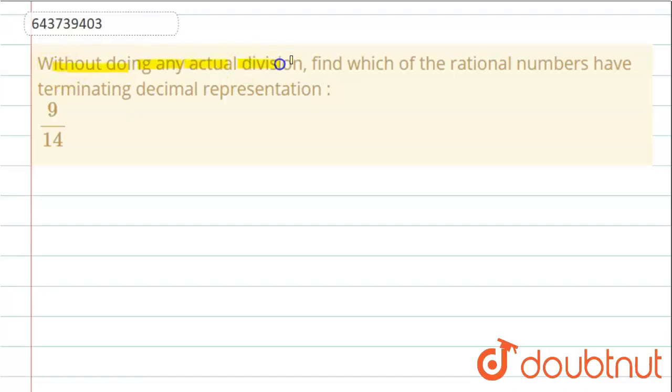In this question, without doing any actual division, find which of the rational numbers have terminating decimal representation.